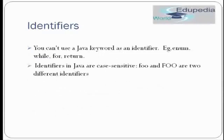Rule three: you cannot use a Java keyword as an identifier. For example, enum, while, for, return — you cannot declare a variable named 'enum' because it is a keyword in Java. Rule four: identifiers in Java are case sensitive. So 'foo' with lowercase and 'Foo' with uppercase are two different identifiers. You need to keep these rules handy to avoid declaring wrong identifiers or variables.